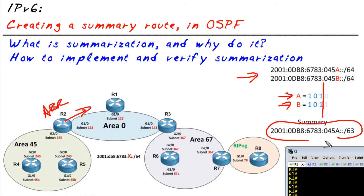So our summary would be 2001:db8:6783:45a::/63, because the high-order 63 bits are in common. The most important part for this discussion is that this is the appropriate summary that R2 should use to summarize the 45a and the 45b.